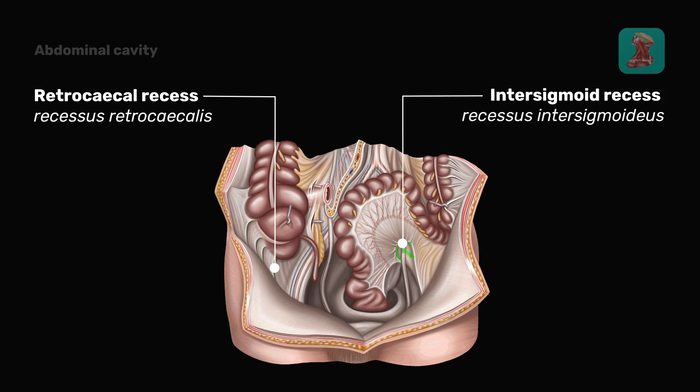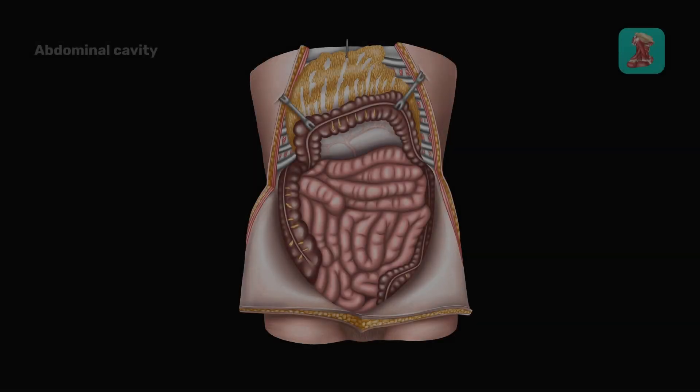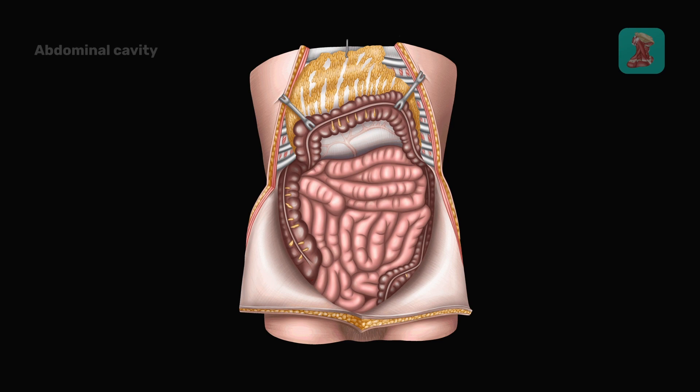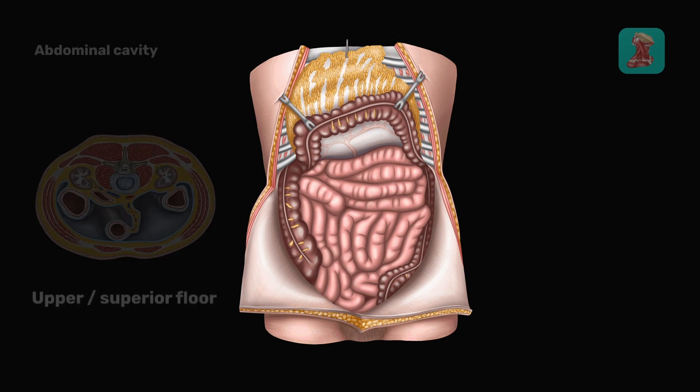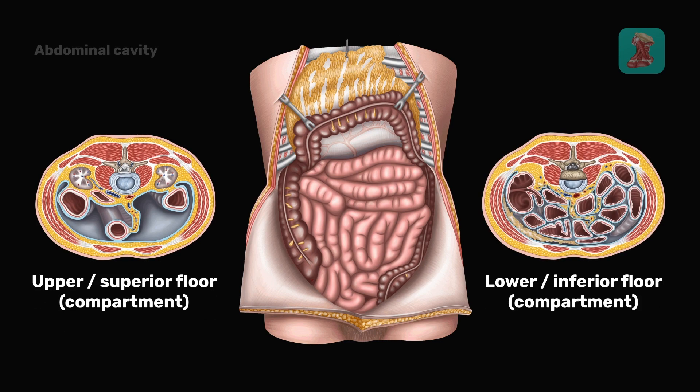The so-called floors can be distinguished in the peritoneal cavity. According to the conventional classification, there are two floors: upper and lower. The border between them is the transverse colon and its mesentery.